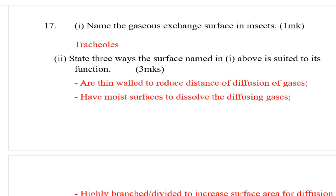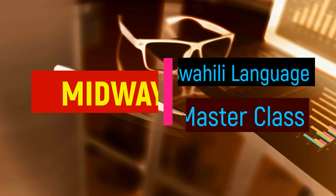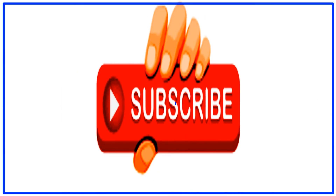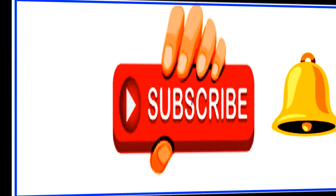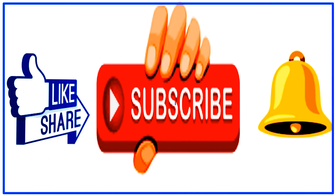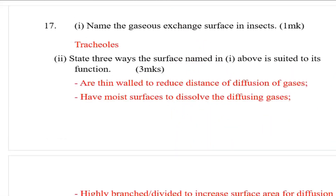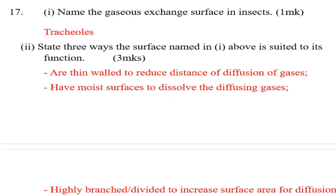Number 17: Name the gas exchange surface in insects. That is the tracheoles. Next, state three ways the surface named is suited to its function — how it is structured so that it can perform its function.